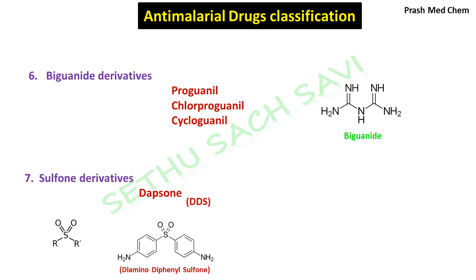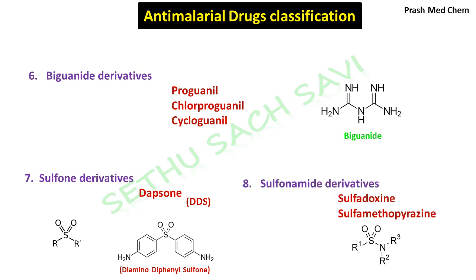Next, in this structure you can again see a sulfone group; however, this time it is attached to a nitrogen atom. This is called the sulfonamide moiety. The sulfonamide group is a very common pharmaceutical moiety, mainly belonging to the anti-bacterial category. Some sulfonamide derivatives like sulfadoxine and sulfamethopyrazine have been shown to have anti-malarial action.